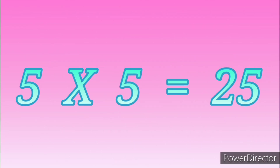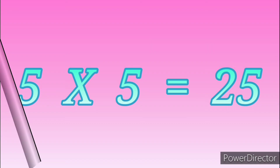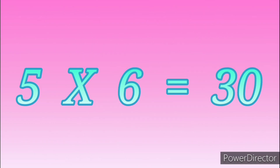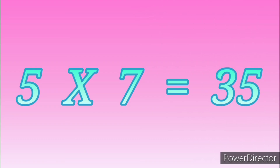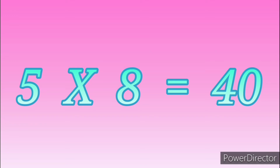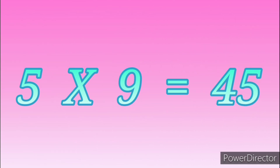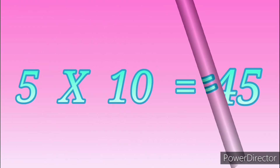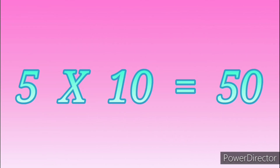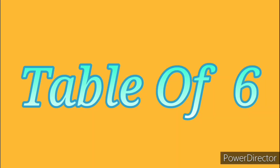5 fives are 25. 5 sixes are 30. 5 sevens are 35. 5 eights are 40. 5 nines are 45. 5 tens are 50.